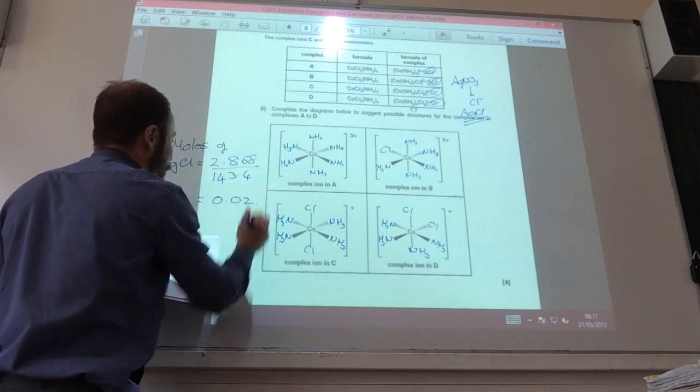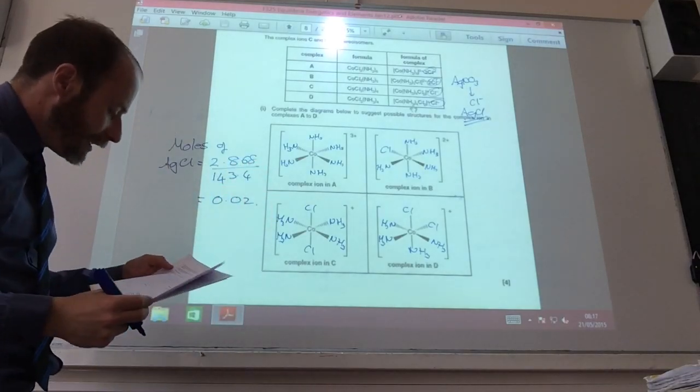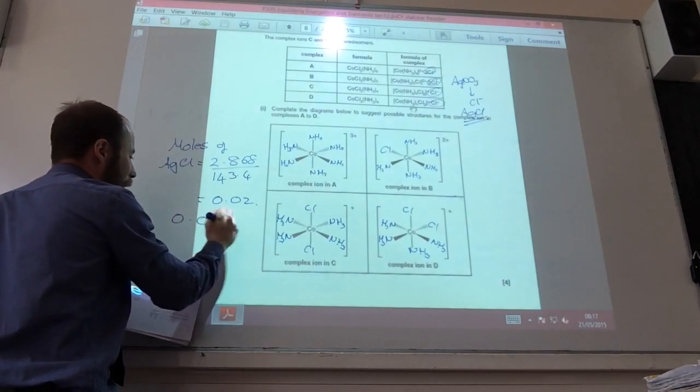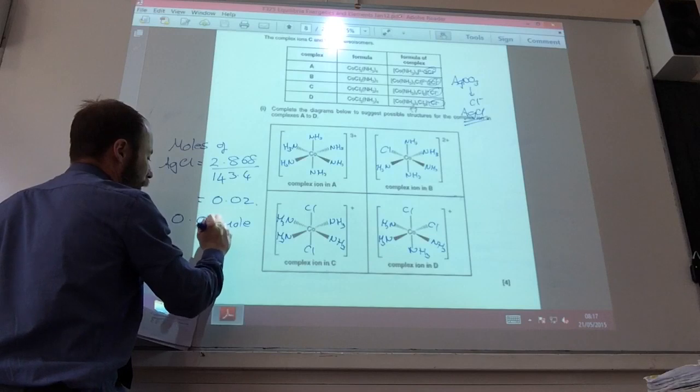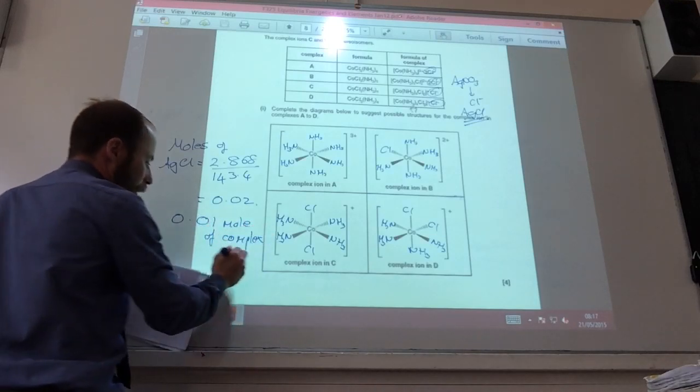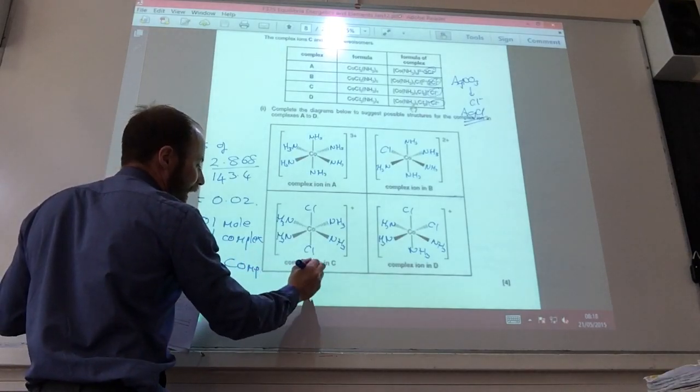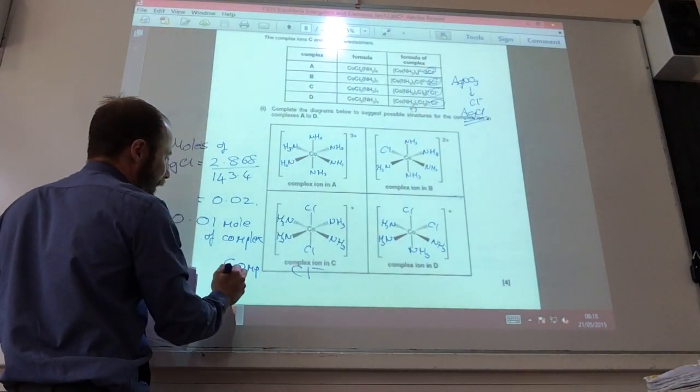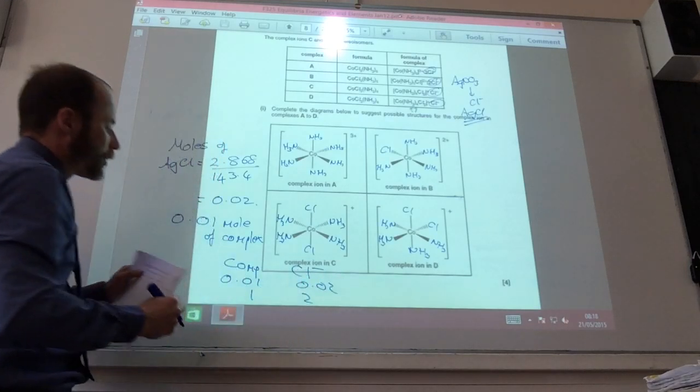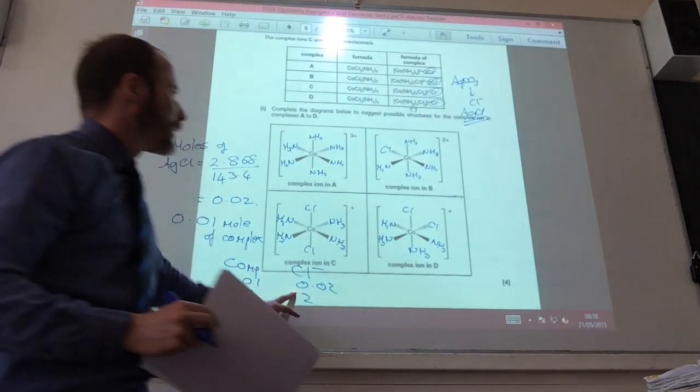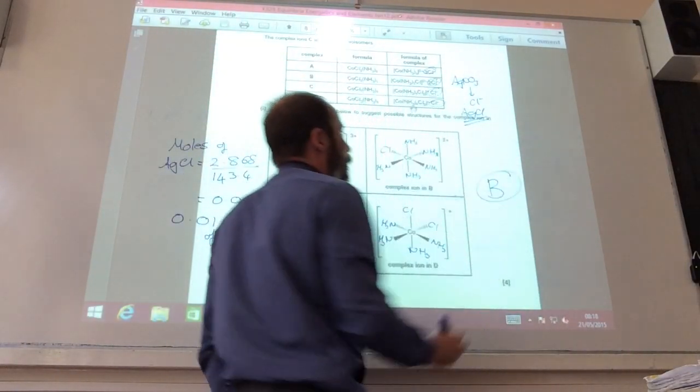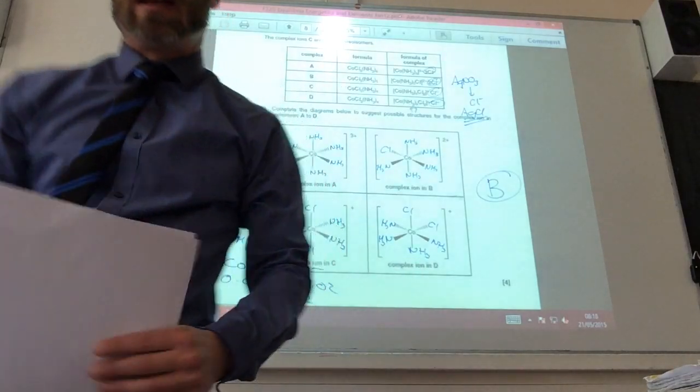That comes to 0.02. They tell you in the question that 0.01 mole of complex reacts. So complex to Cl minus is 0.01 to 0.02 or 1 to 2. For every one complex, there must be 2 free chlorides that could react. Therefore, it was B because there were 2 chloride ions there.